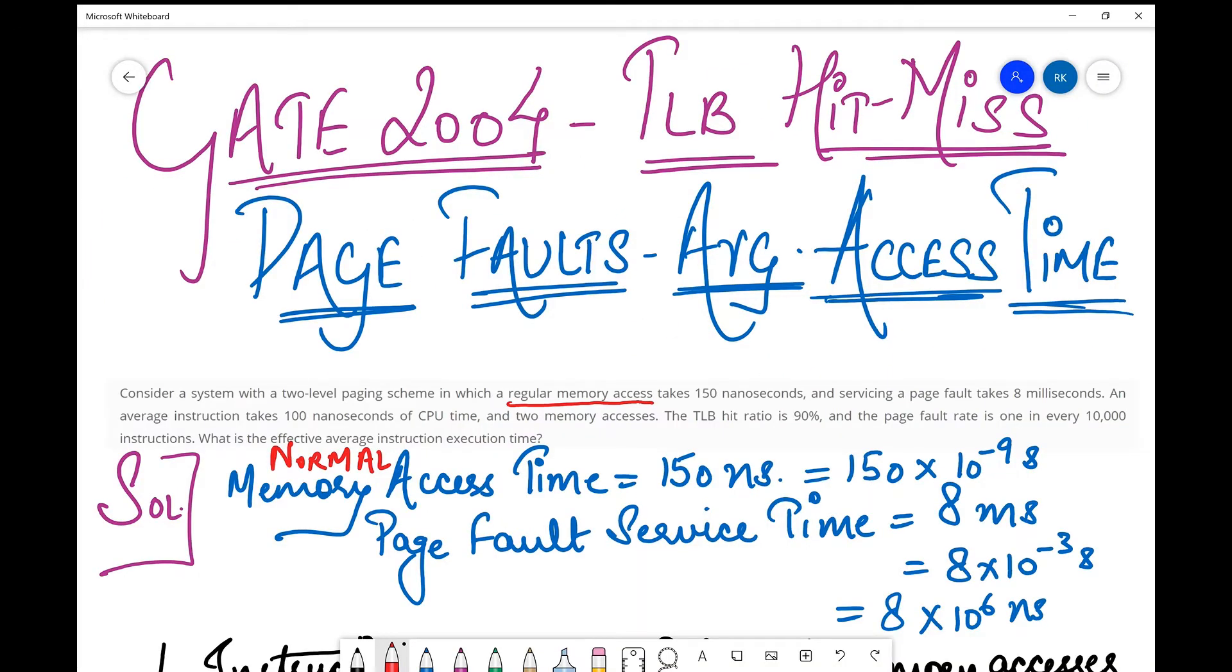In this question, we have interesting things to find out. I'll briefly go through the question. We have considered a system with a two-level paging scheme in which a regular memory access time takes 150 nanoseconds and servicing a page fault takes 8 milliseconds.